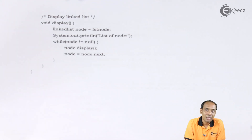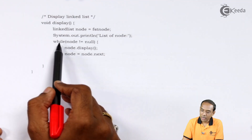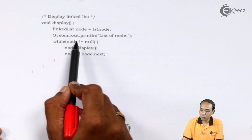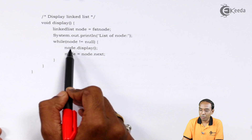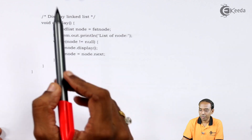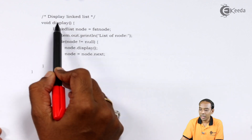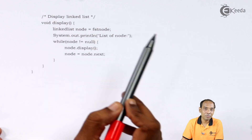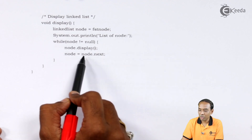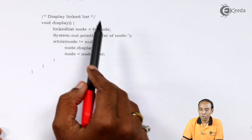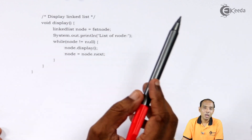Once node comes equal to null it means we have reached the last of the linked list. While node is not equal to null, that means it is going to hold some values. Till that point I am going to call the display function written here. Node is going to call the display function, and to get the address of the next element I use node dot next, transferring node dot next back to node.